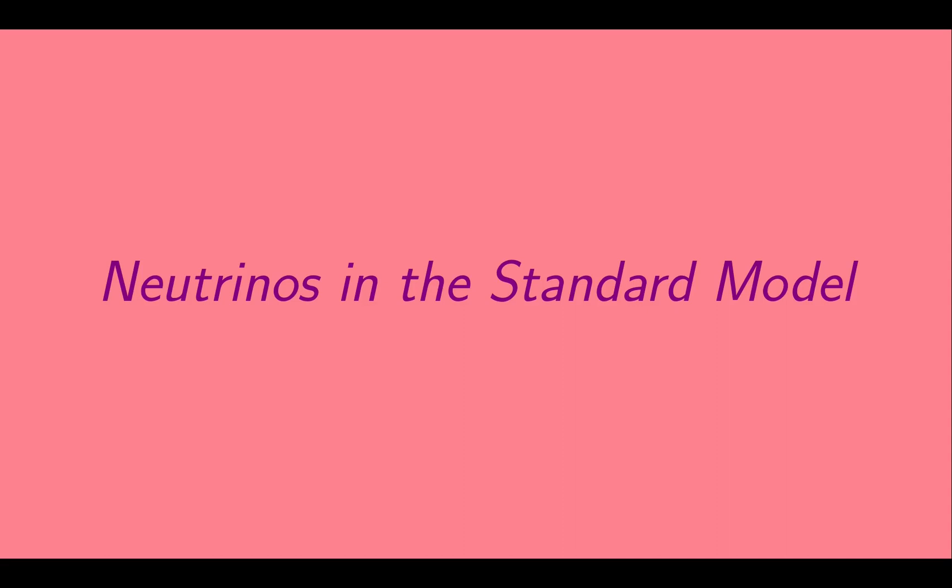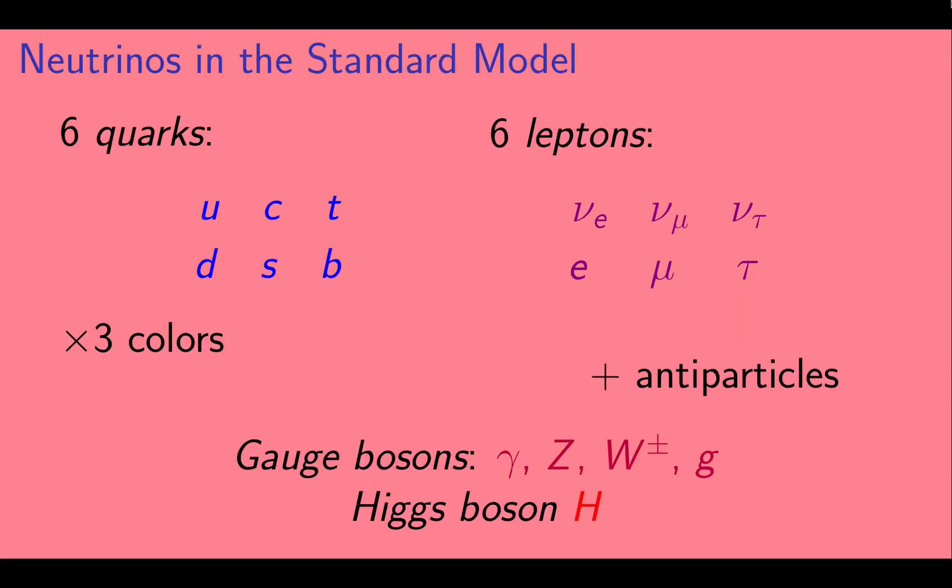So first, let's talk a bit about neutrinos in the standard model. Here's the particle content of the standard model. It contains six quarks and six leptons.